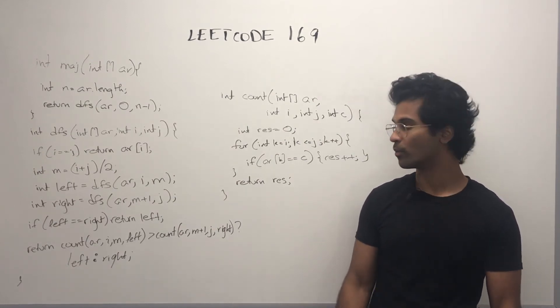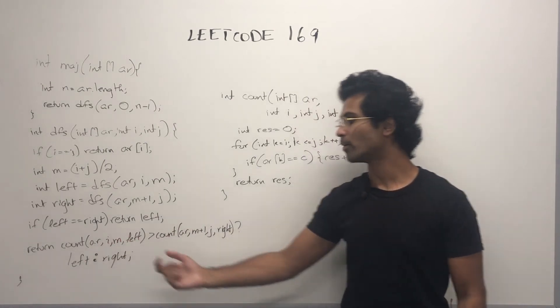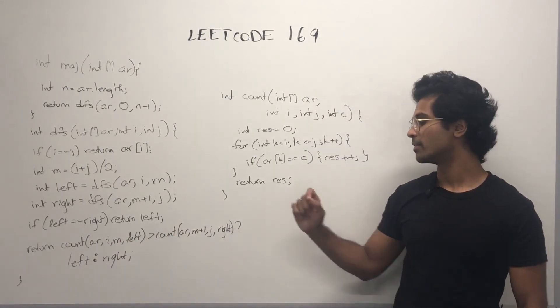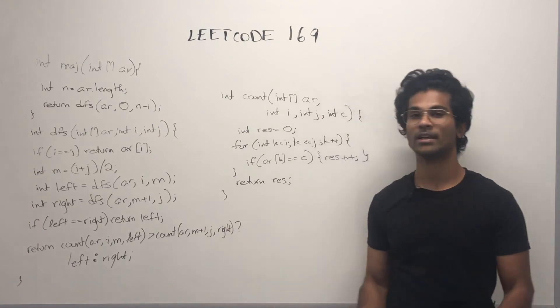Otherwise, if they disagree, we use our helper method to count iteratively if the left or the right is going to be our answer.